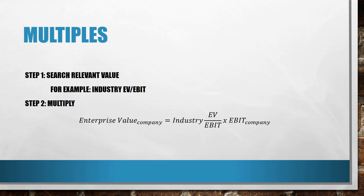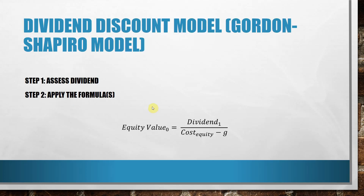This is a very direct way to calculate enterprise value. For the dividend discount model — such as the Gordon Shapiro model — you look up the dividends or estimate future dividends, then apply the formula: equity value at time zero equals the next dividend divided by the cost of equity minus the growth rate.